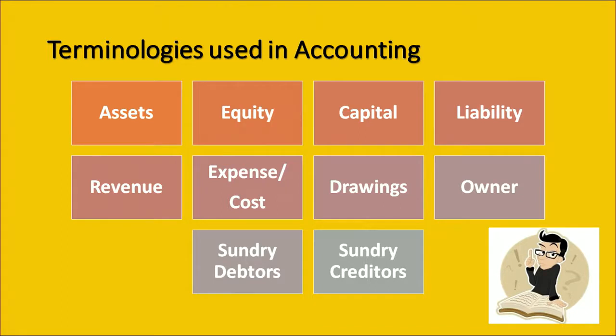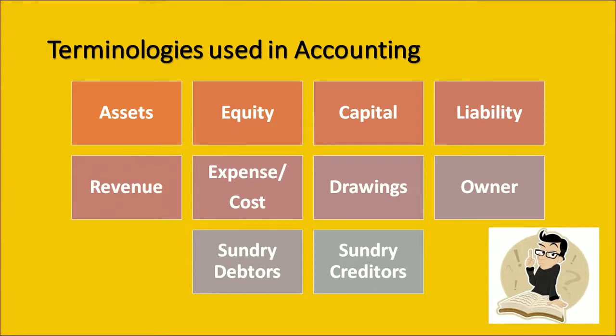There are certain terminologies used in accounting. First, we talk about assets — referring to the tangible and intangible assets which are of future use to the organization. Tangible assets include machinery, capital, and labor; intangible assets include goodwill and patents. Equity is the total claim against the enterprise. Capital refers to assets minus liabilities. Liability is what you owe to others — it can be in the form of credit, outstanding payment, or overdraft.